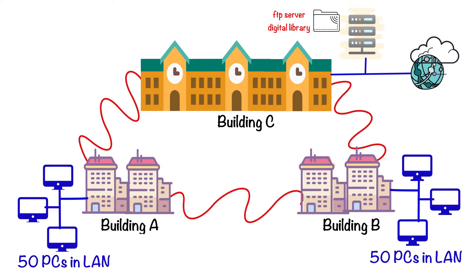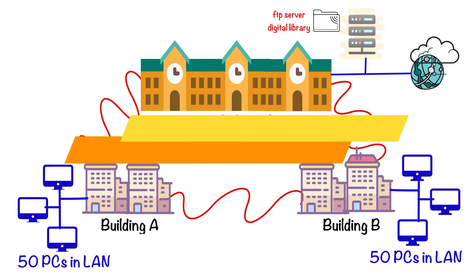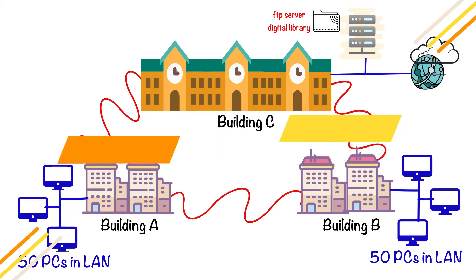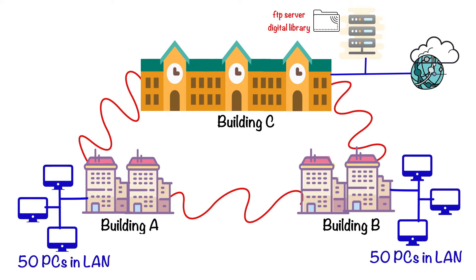Since the distance between the devices in these buildings is above 100 meters, we use fiber cable to form the interconnectivity between them. We connected building A to building B, building A to building C, and building B to building C — creating a kind of triangle communication. By using this interconnectivity among the buildings, we have created a campus area network.